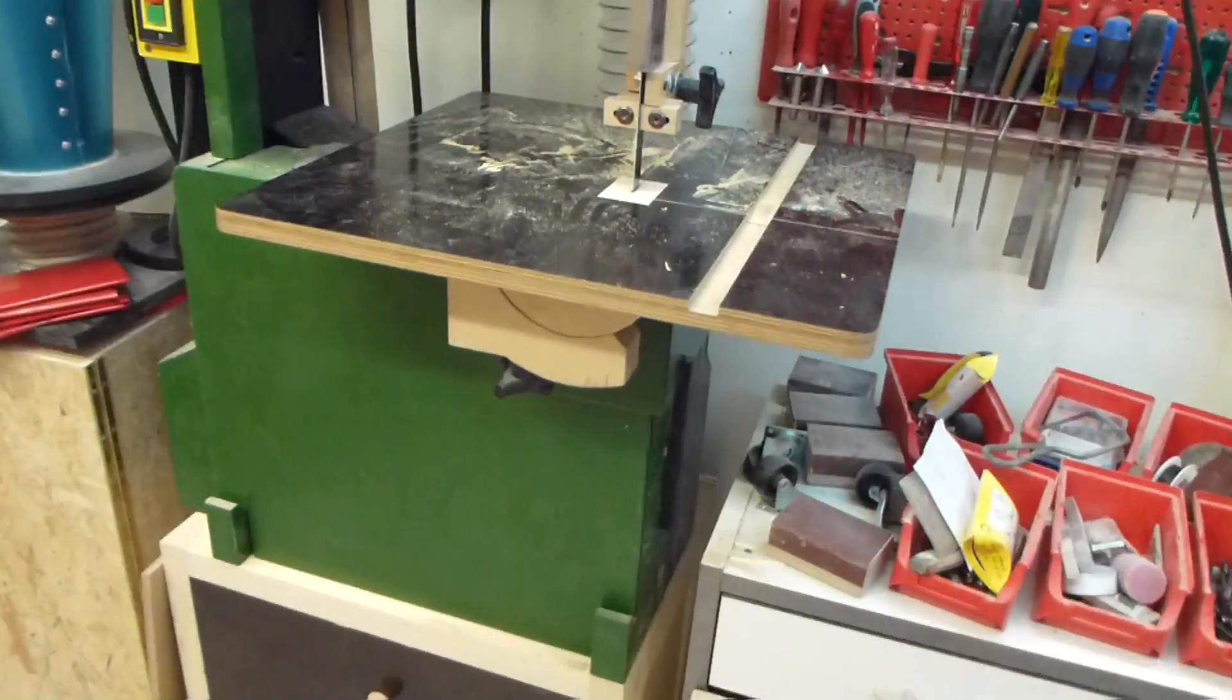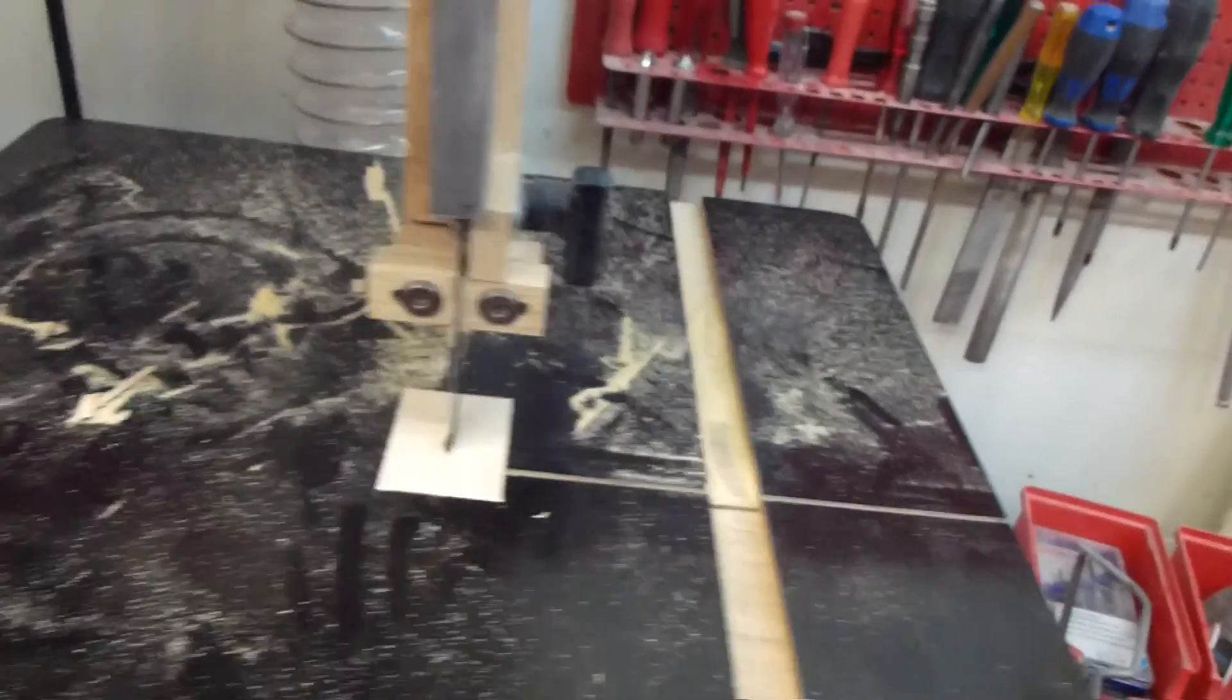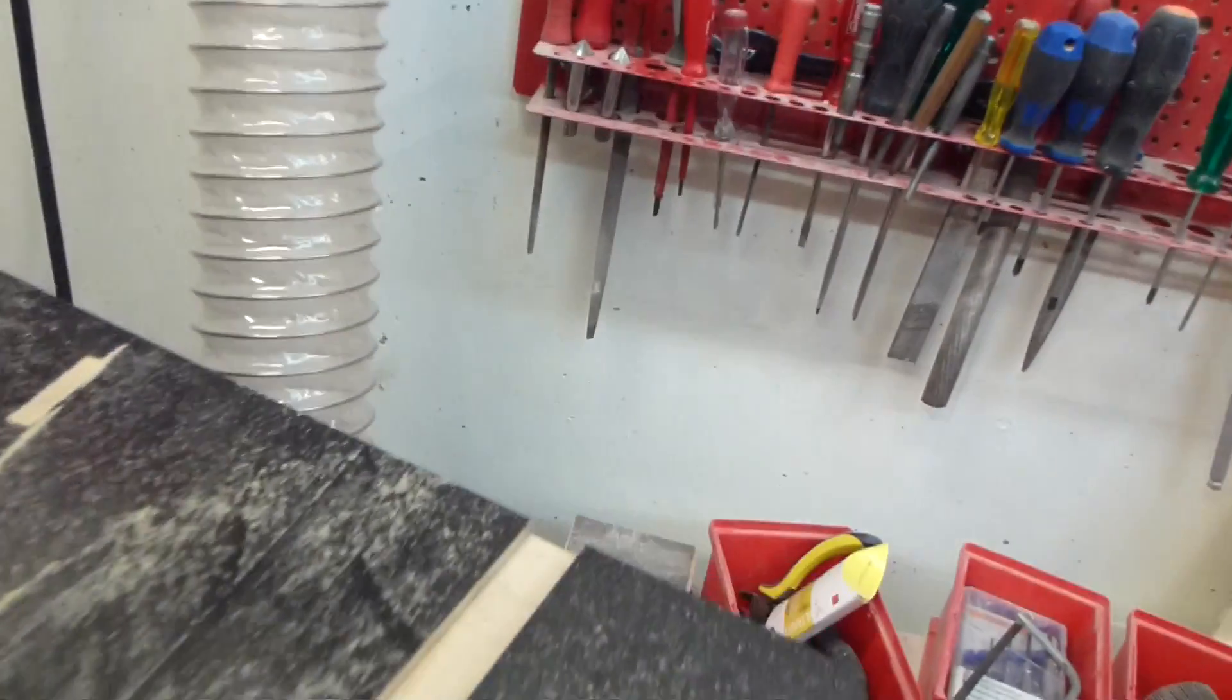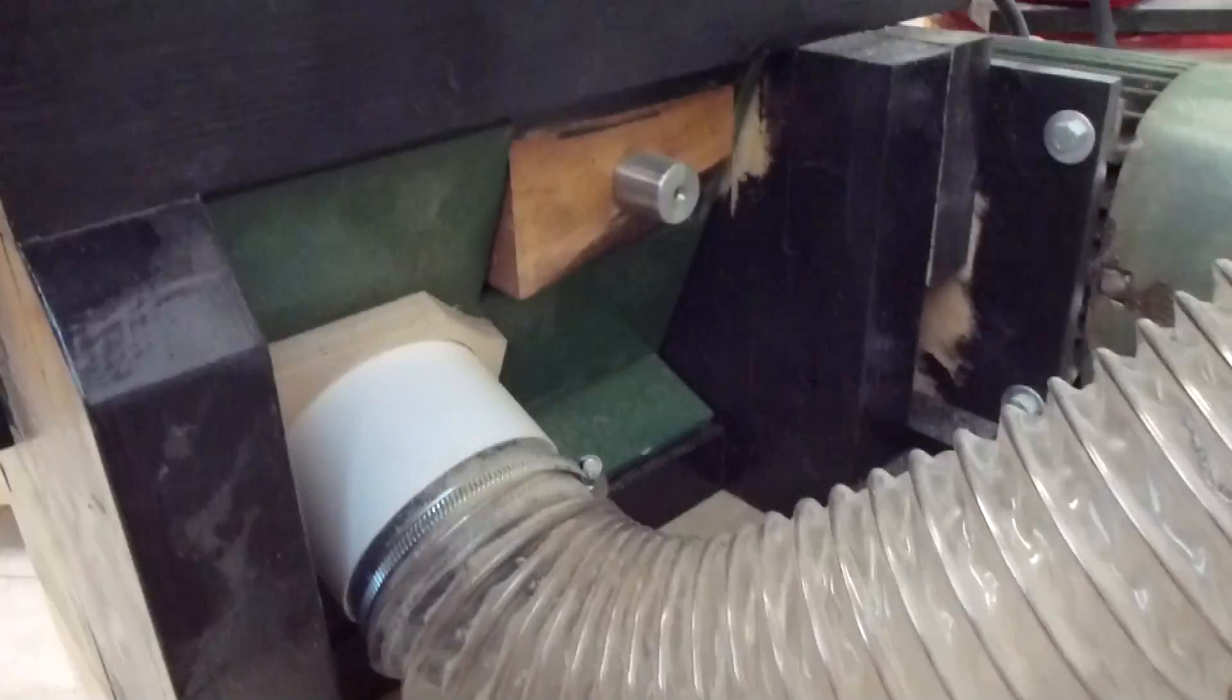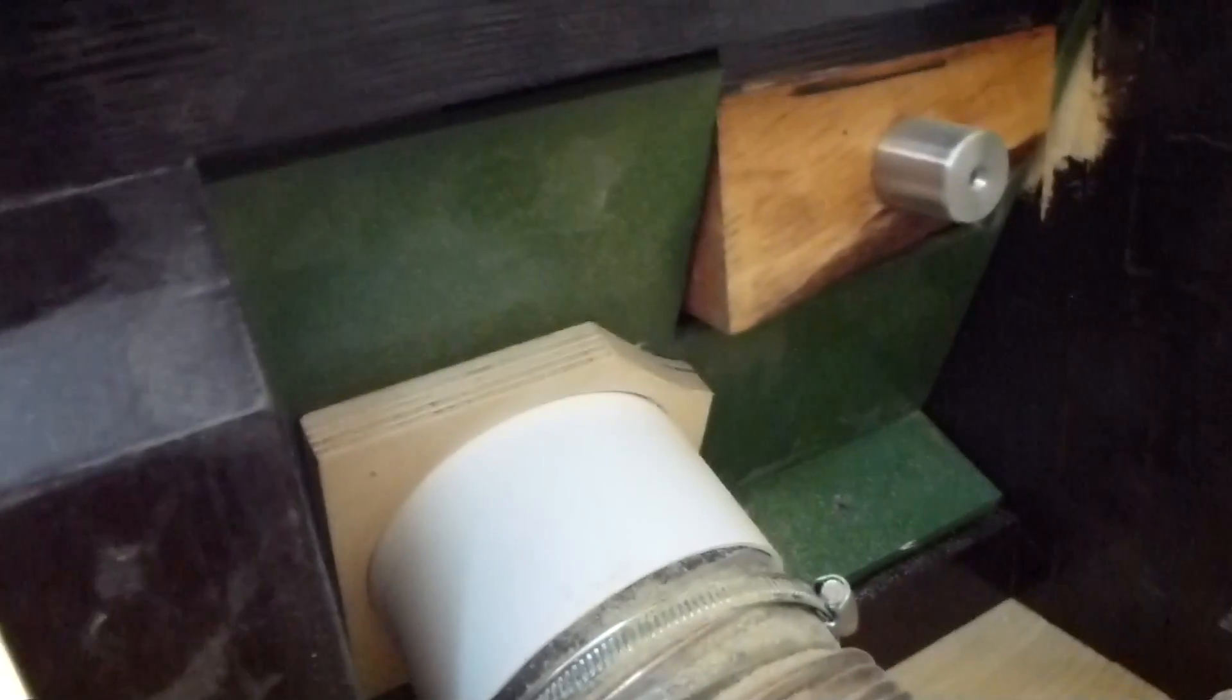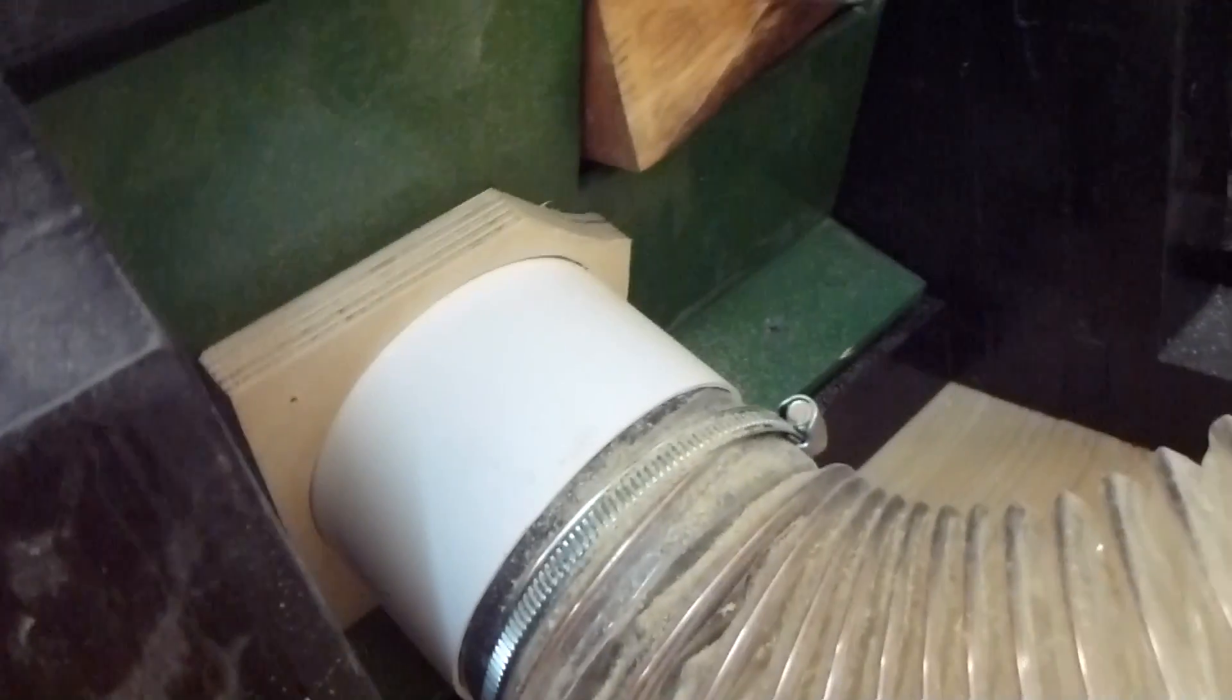The dust collection for the homemade bandsaw is in the back. Also four inch hose. And it connects to the saw in the back cover.